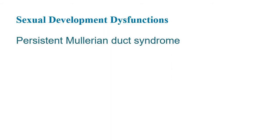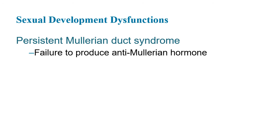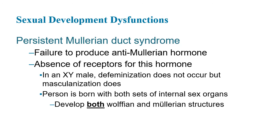The next is persistent Mullerian duct syndrome. If the Mullerian system being suppressed results in defeminization, then persistent Mullerian duct syndrome is the opposite — failure to produce anti-Mullerian hormone means defeminization does not occur. In this case, a person will be born with both sets of internal organs because they're developing both the Wolfian and the Mullerian structures. They've got XY chromosomes and typically get androgen release, but they don't have defeminization from the anti-Mullerian hormone. It usually results from a problem with the SRY gene.